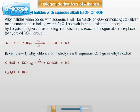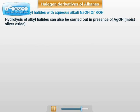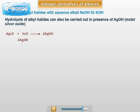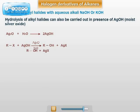Ethyl chloride when boiled with aqueous KOH, ethyl alcohol is formed. Formation of alcohol from alkyl halide can also be carried out in presence of AgOH, that is moist silver oxide. Silver oxide suspended in boiling water is called moist silver oxide. Moist Ag2O is used because AgOH is non-existent. The general reaction is RX plus AgOH; as AgOH is not in existence, on the arrow we write moist silver oxide. It forms alcohol and AgX as the by-product.